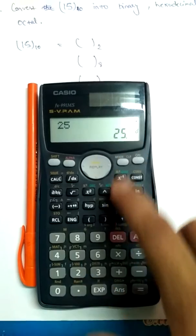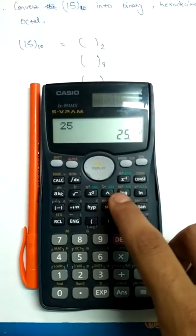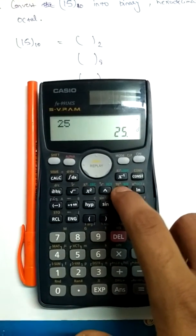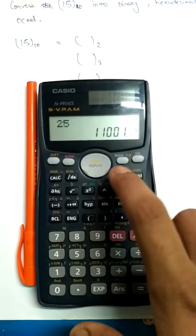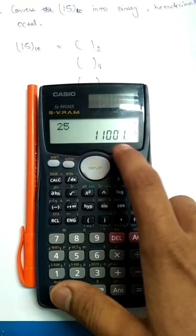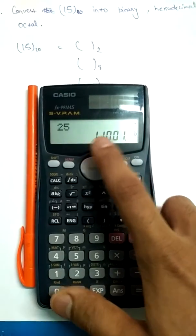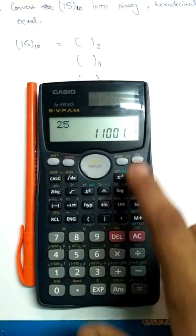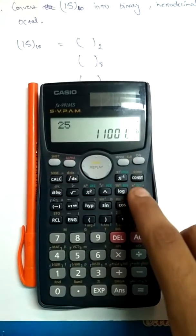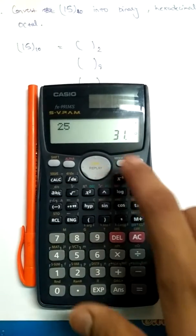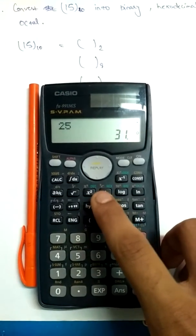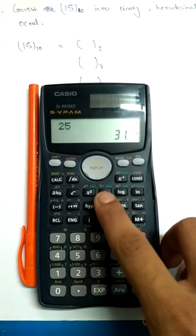My number 25 is a decimal number. I am going to convert it into binary — I press the binary button and 25 in binary is 11001. Now 25 in octal will be 31.